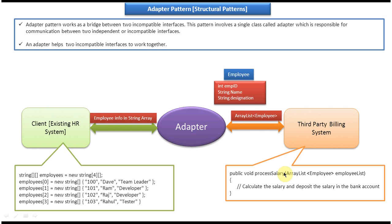The process salary method will then calculate each employee's salary and deposit it into their bank account. In this way we can make these two incompatible interfaces work together with the help of the adapter. Reading back the explanation: adapter pattern works as a bridge between two incompatible interfaces. This pattern involves a single class called adapter which is responsible for communication between two independent or incompatible interfaces.